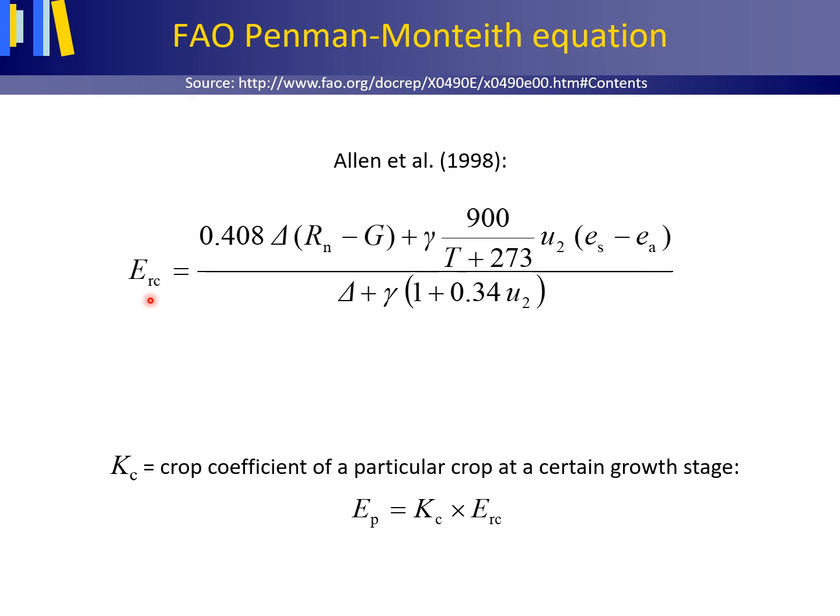an albedo of 0.23, an aerodynamic resistance in second per meter of 208 divided by U2, where U2 is the wind speed in m per second at 2 m, and a surface resistance of 69 s per meter. Gamma is the psychrometric constant, and T is the air temperature in degrees Celsius.